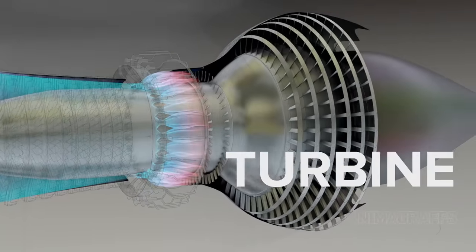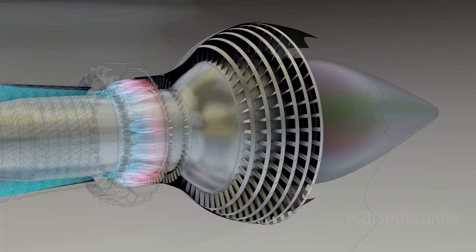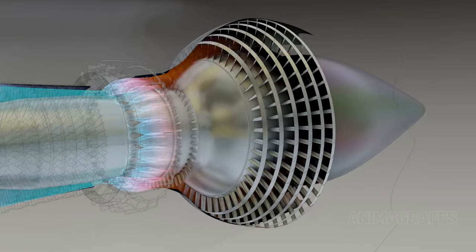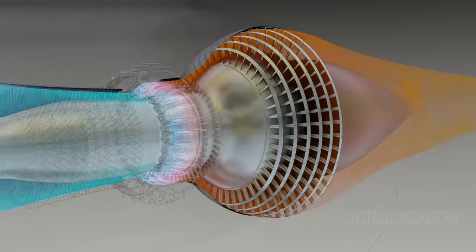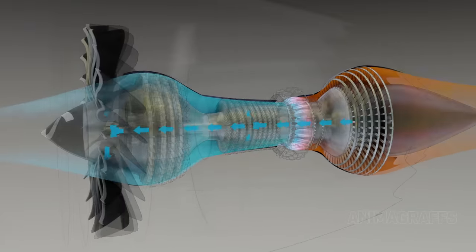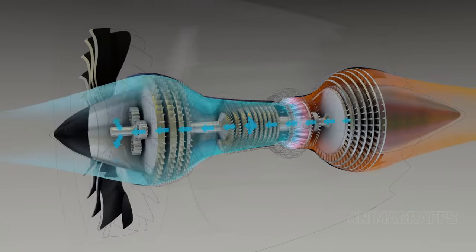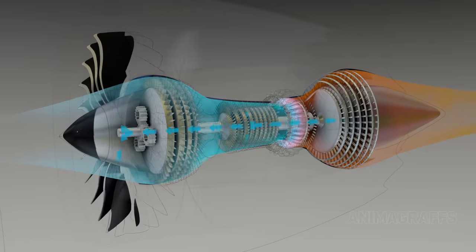The turbine. Turbines at the rear of the jet engine are powered by exhaust gases exiting the combustor. Much of the turbine power is used to turn the fan, while a smaller percentage powers the compressor stages.